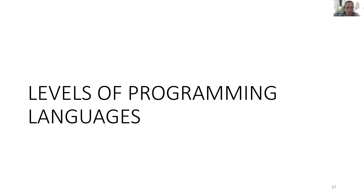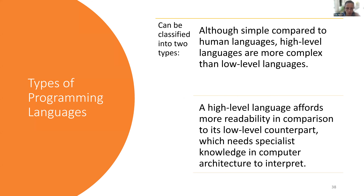That brings us to the concept of levels of programming languages. Not all programming languages are the same and they don't all interact with hardware in exactly the same way. Computer languages can be broadly classified into two types. High level languages are more complex than low level languages. Low level languages involve working directly with hardware — interfacing with the RAM, CPU, and various components. A high level language is up closer to where humans are, things we can read and write.